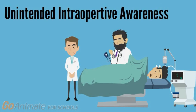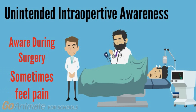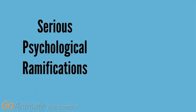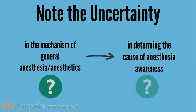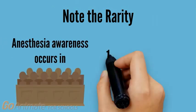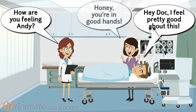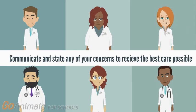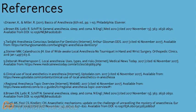One major risk of general anesthesia is unintended intraoperative awareness, or anesthesia awareness. This refers to the phenomenon where a patient becomes aware of their surroundings during a procedure, even sometimes reporting the sensation of pain. This can obviously have serious psychological ramifications and is currently the subject of heavy research. Since we do not know the exact mechanism of general anesthesia, it is tough to determine the cause of anesthesia awareness. It should also be noted that this phenomenon is very rare — one in every 19,000 — and should never scare a patient away from what could be a necessary surgery. Overall, it is important to be honest with your anesthesiologist about your health, and especially your drug and alcohol use, as this can have an impact on the dosage required. So, thank you very much.